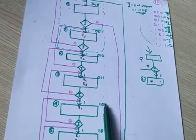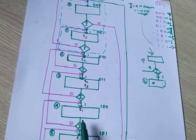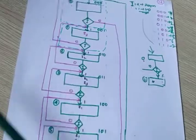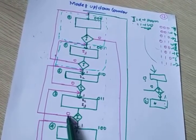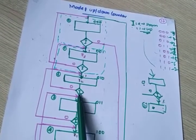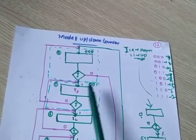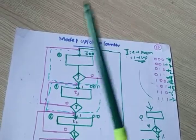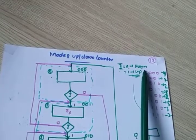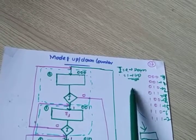At 100, if i is 0, it should go to 011. At 011, if i is 0, what happens — it goes to 010. At 010, if i is 0, it goes to 001. At 001, if i is 0, it goes to 000. Suppose you are in 000 and i is 0 — down count. You have to go to 111.